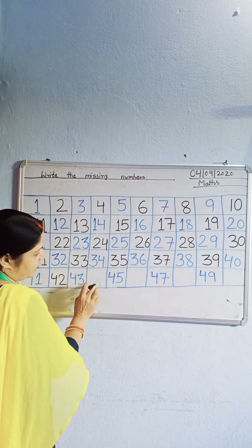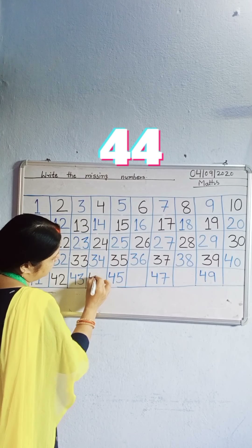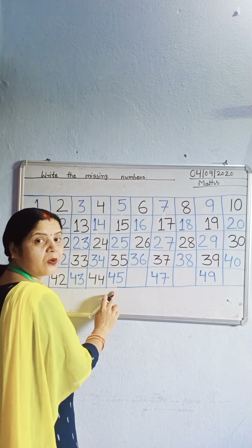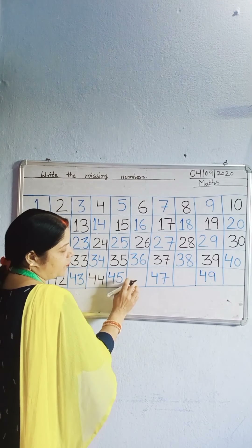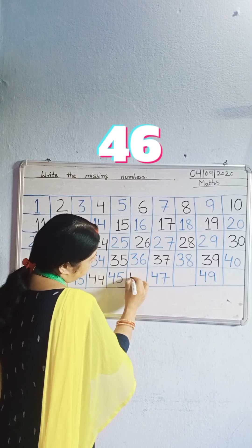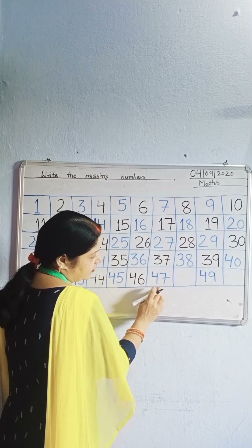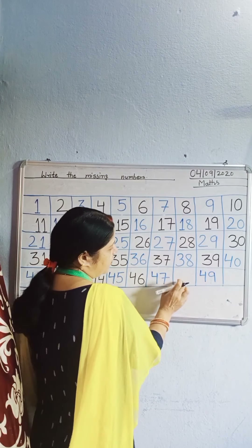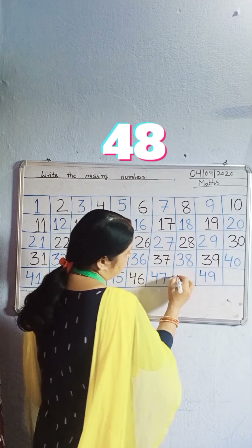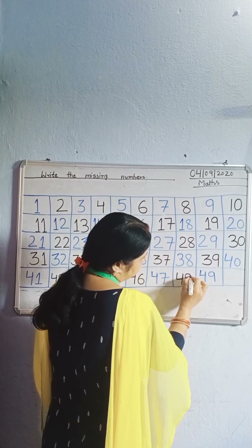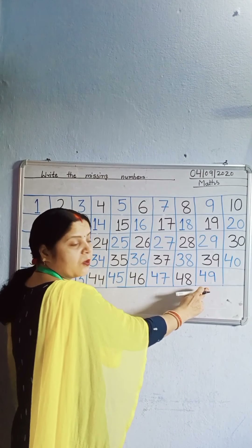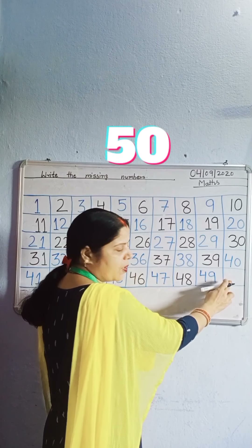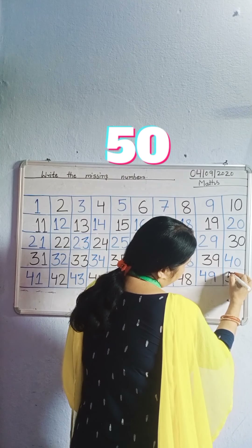43. Which number is missing? 44. Write down 44. 45. Which number is missing? 46. Next, which number? 47. Which number is missing? 48. Next, which number? 49. Which number is missing? 50. Write down 50.